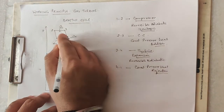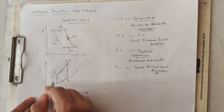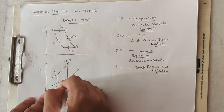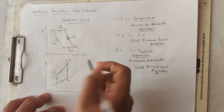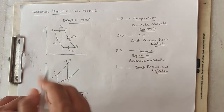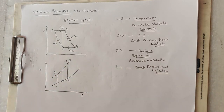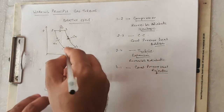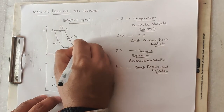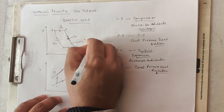So on the TS diagram we have points 1, 2, 3, and 4. Processes 1 to 2 and 3 to 4 are isentropic processes. Processes 2 to 3 and 4 to 1 are constant pressure processes — heat supplied and heat rejected respectively. The governing relation for this isentropic process is PV to the power gamma equals constant.